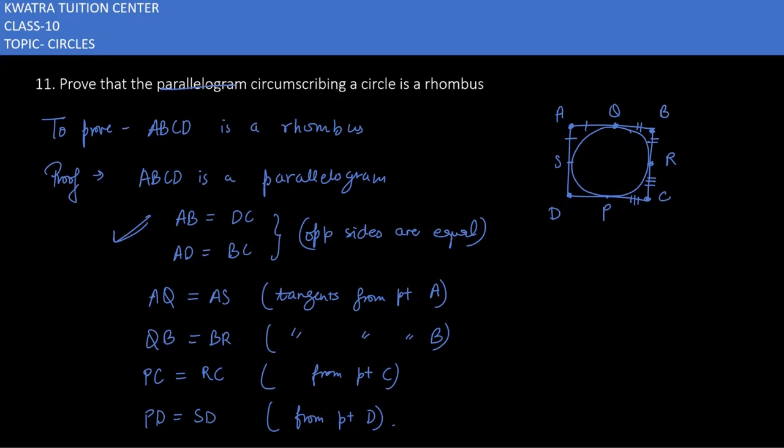Add all the left hand side and right hand side. So it will be AQ plus QB, then you have PC plus PD, then you have AS plus SD, then last one will be BR plus RC. On the left side we have AB, PC plus PD will be CD, and then we have AS plus SD which is AD, then we have BR plus RC which is BC.